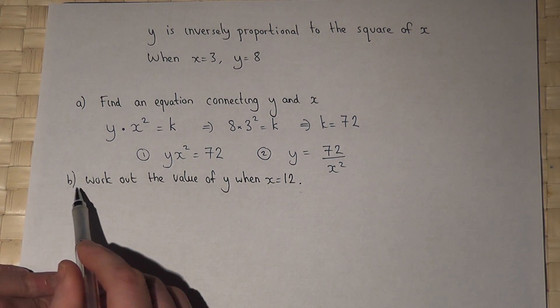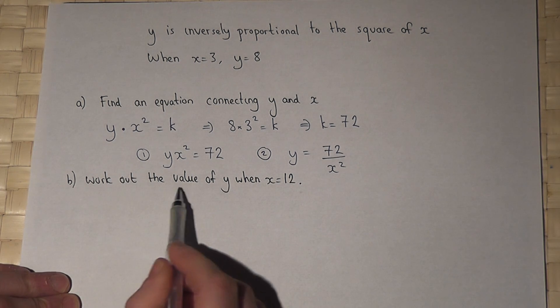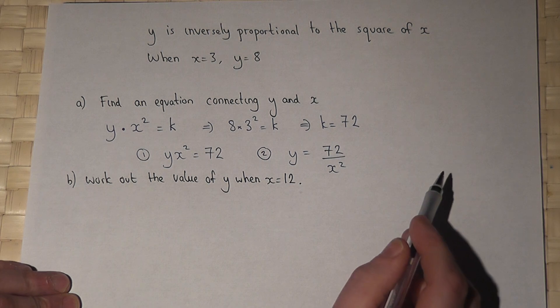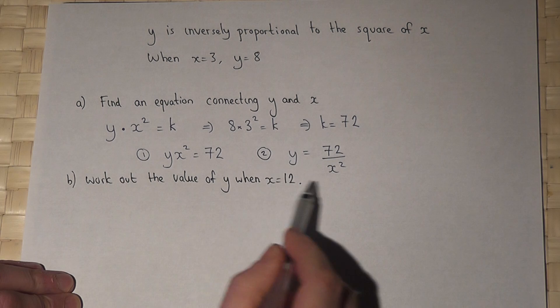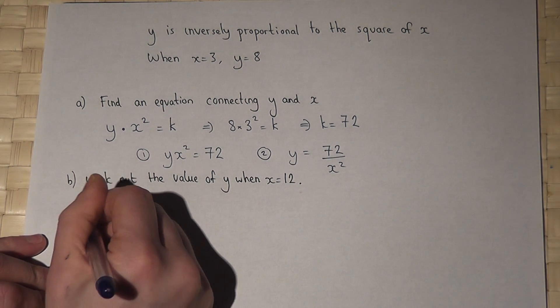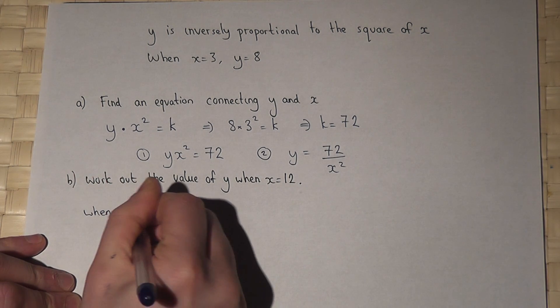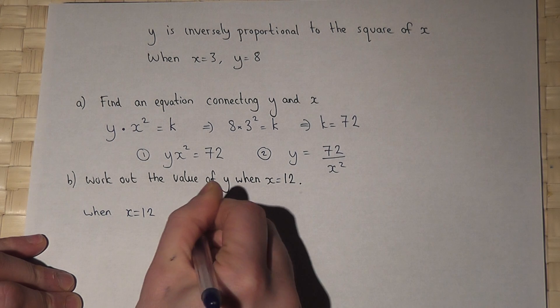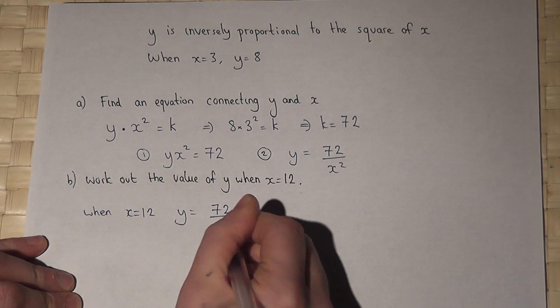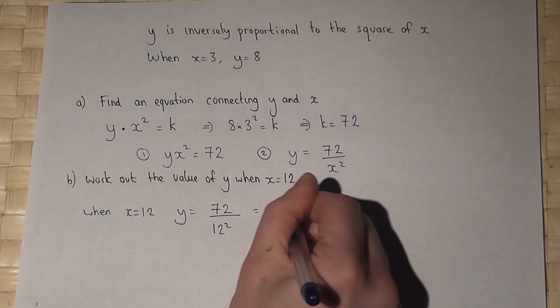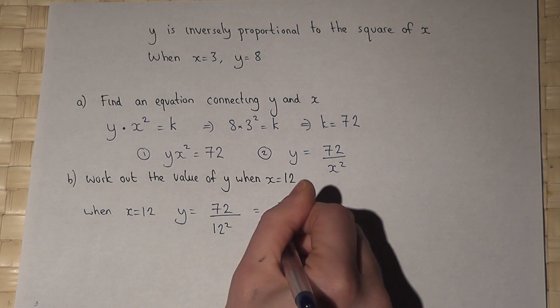In part b, I'm asked to find out the value of y when x is 12. I can therefore jump to this rearrangement. Because when x equals 12, y equals 72 over 12 squared. Well, 12 squared is 144.